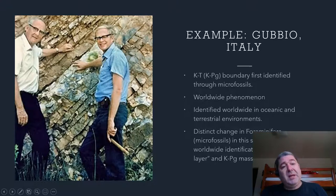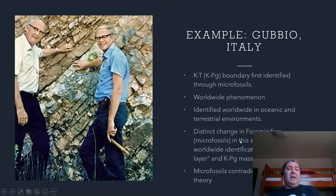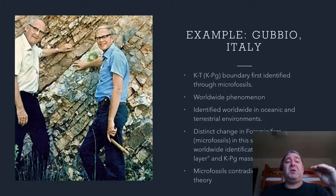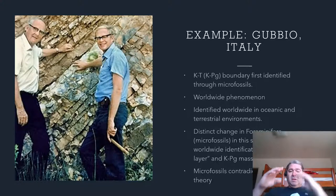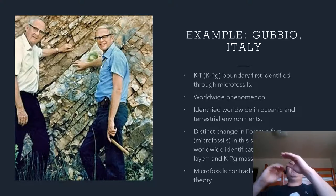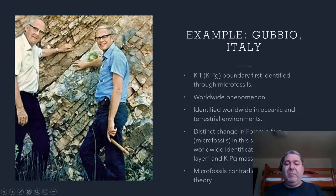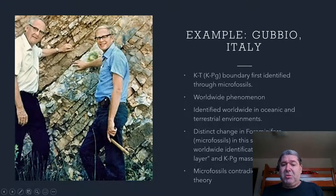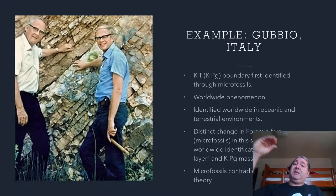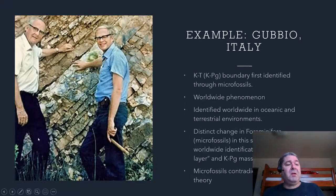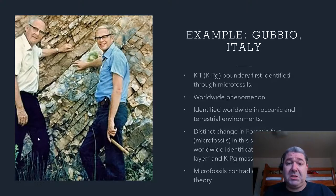This iridium layer marks that asteroid impact layer worldwide. We can find this in terrestrial and oceanic sediments. This very consistent worldwide phenomenon of distinct groupings of fossils that correlate and relate through time tends to contradict Young Earth theory — that these would all be laid down within the same period of time. You wouldn't have this biostratigraphy or these biozones, especially with forams — microscopic marine critters that live and die by the trillions. They would be all mixed up throughout the section. We wouldn't be able to identify distinct levels and distinct successions of fauna.